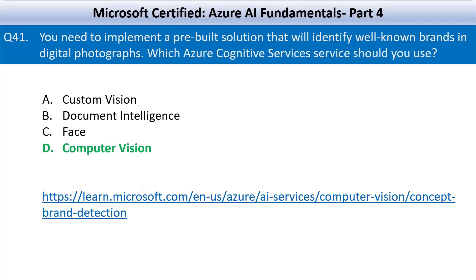You will need to use Computer Vision in this case. Computer Vision is a pre-built Azure Cognitive Service that can analyze digital images and return information such as objects, text, faces, scenes, and well-known brands. It includes brand detection as part of its image analysis capabilities. There is a link on your screen — go through the link to understand more about the brand detection feature of Computer Vision.